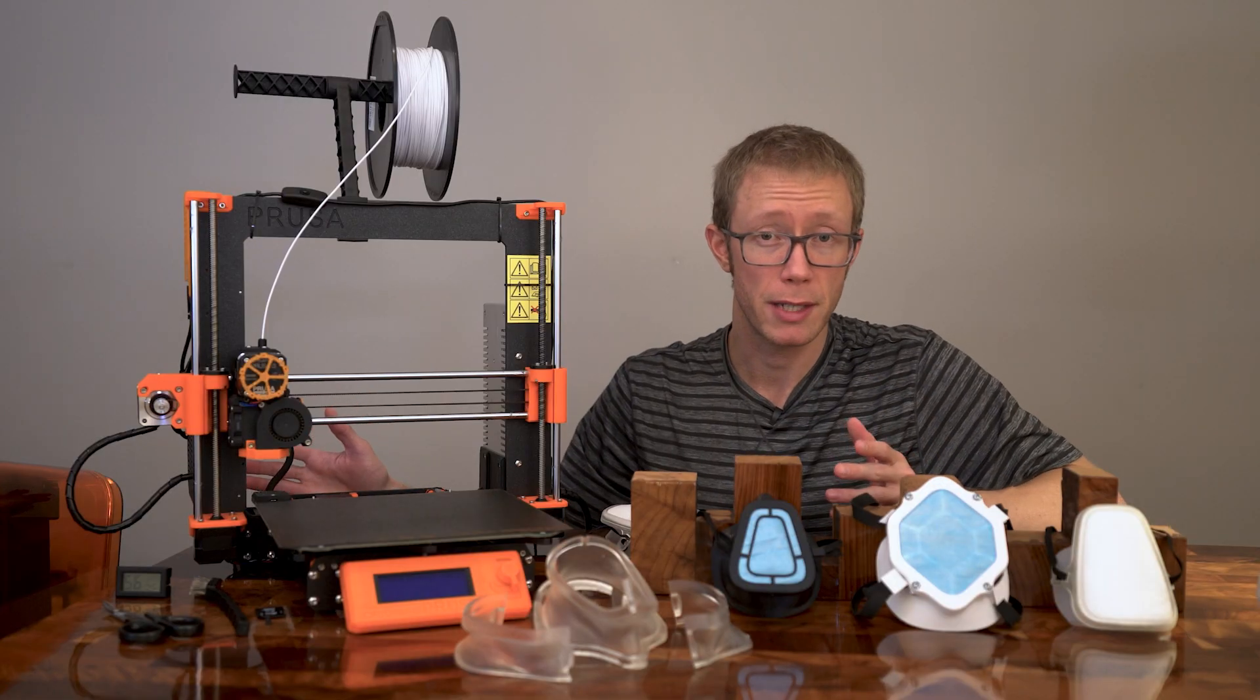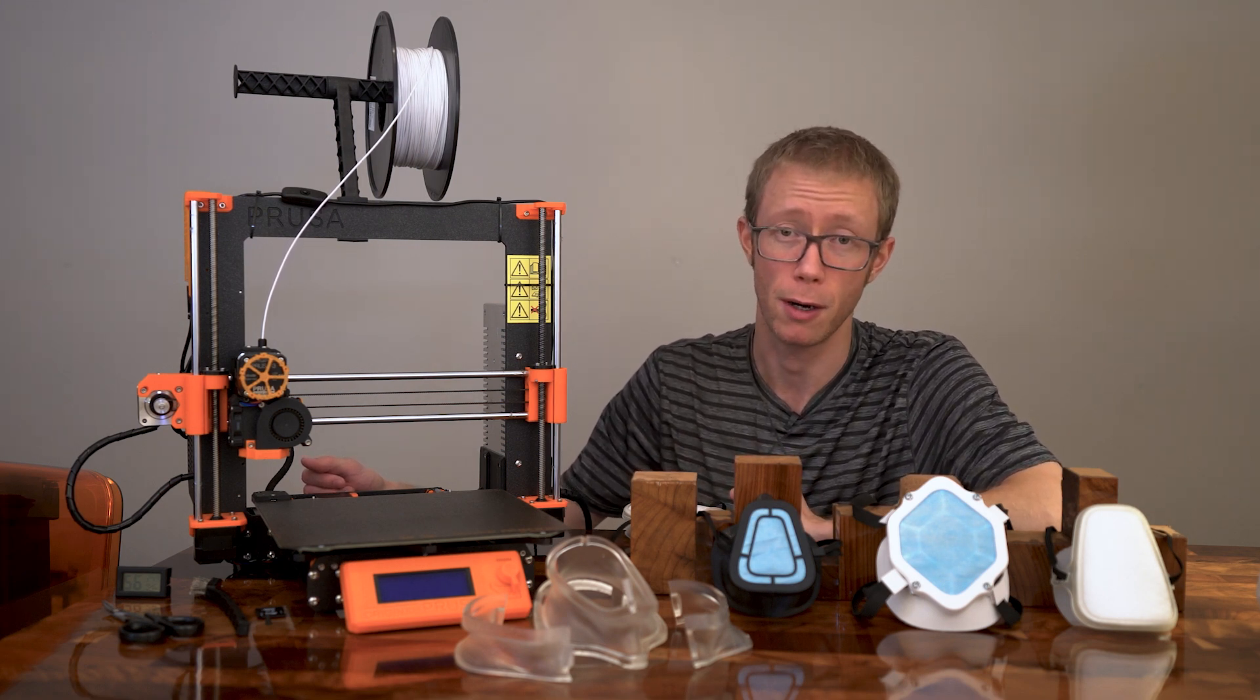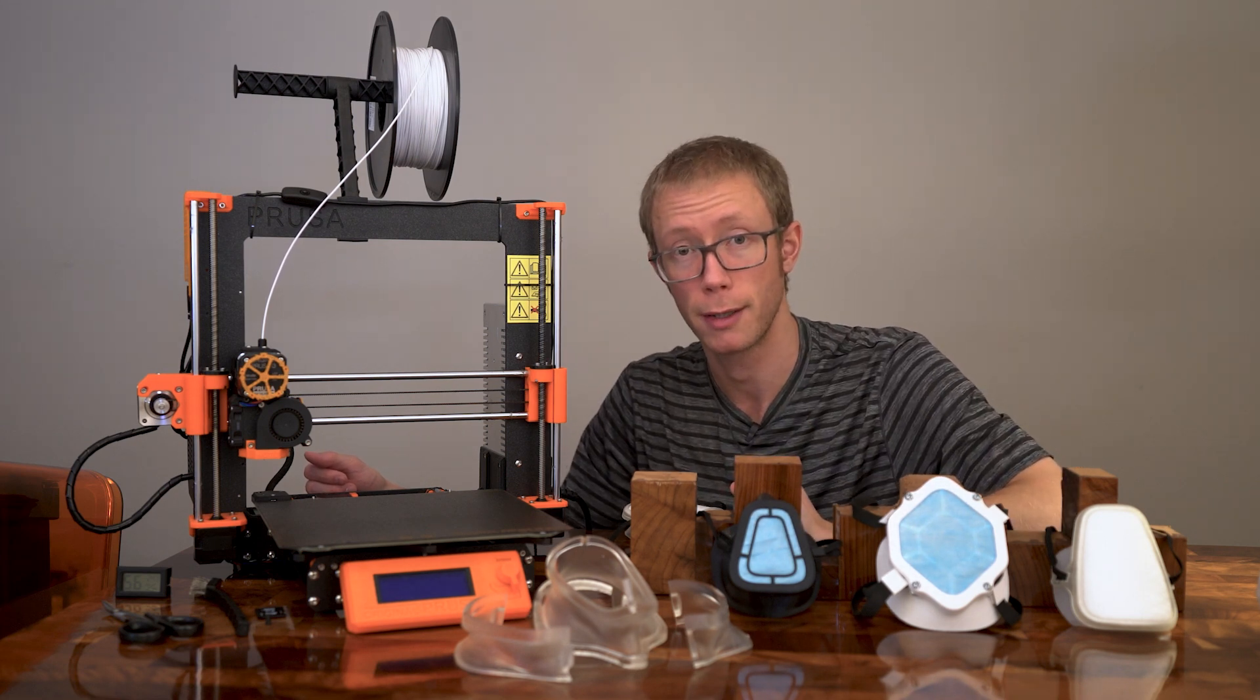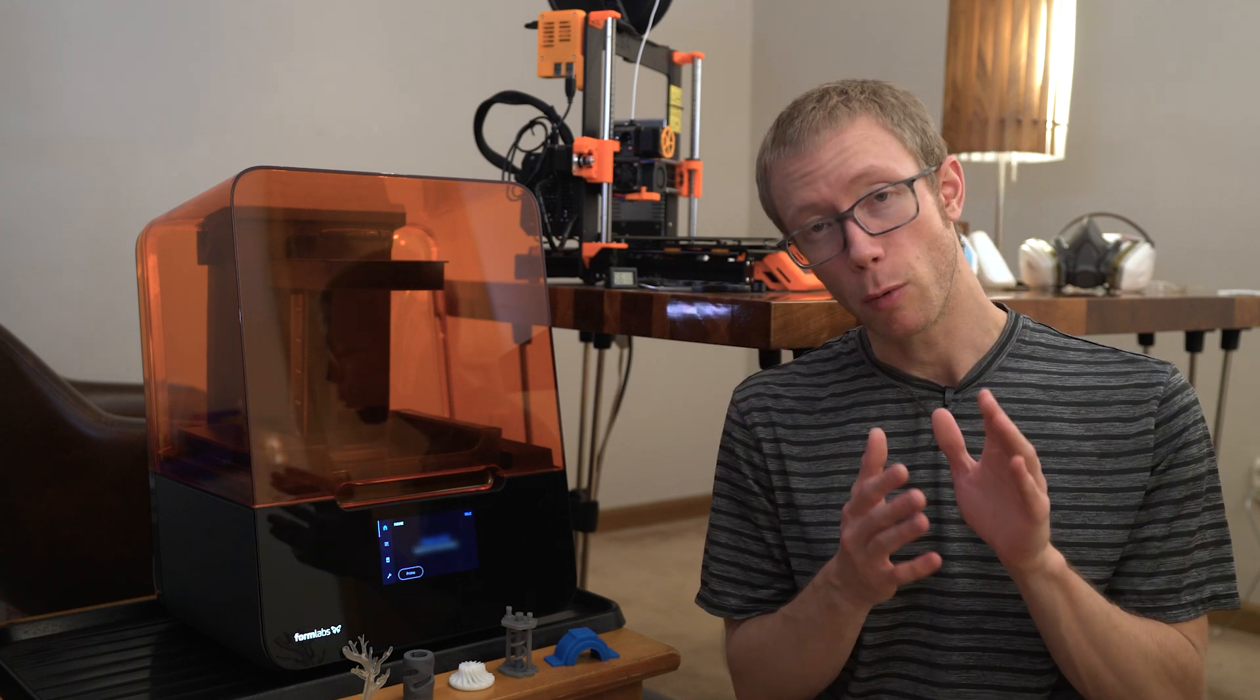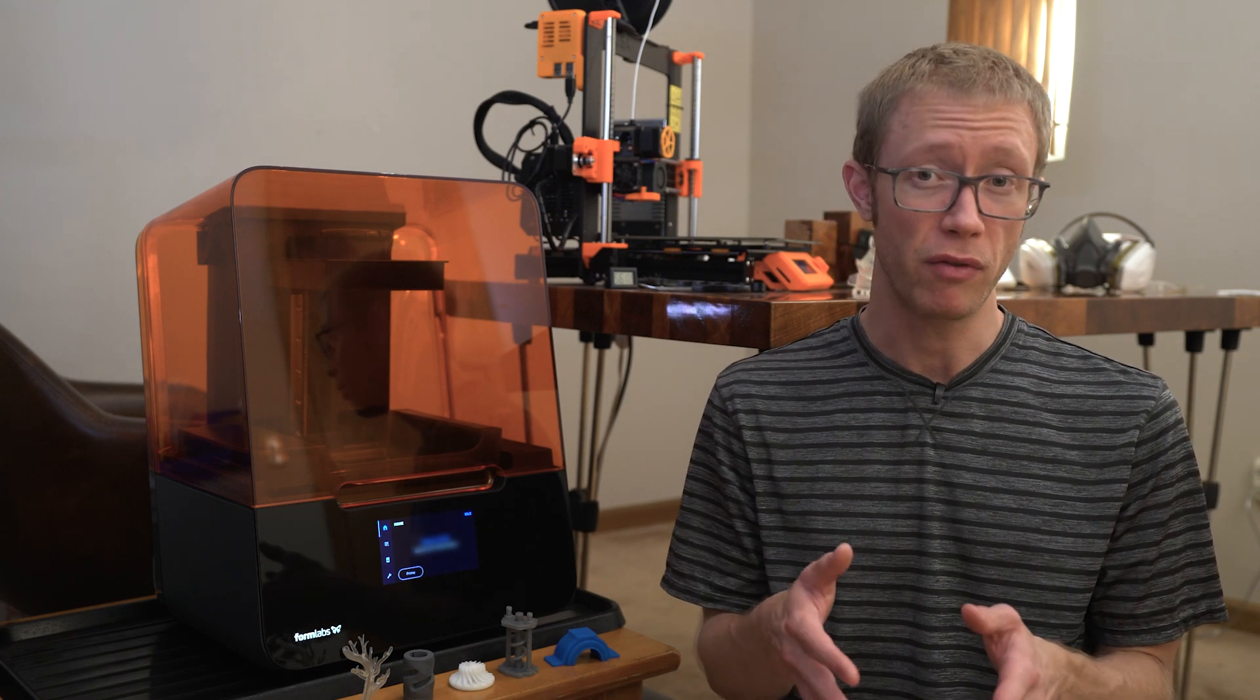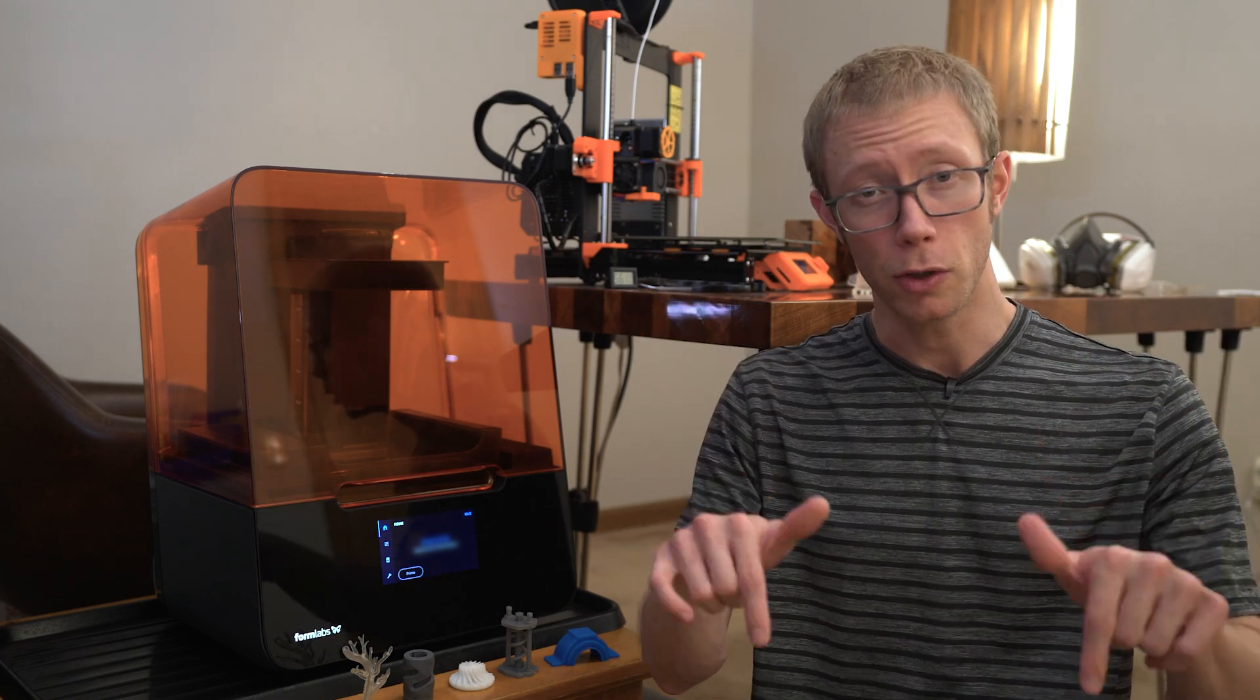This will be a bit more of an advanced tutorial than my previous two videos. Although it may be possible to make one of these on an FDM printer, you will likely have much more success on a resin printer. It is very important to have nice smooth surfaces in order for the mold to function correctly. I picked up a FormLabs Form 3, but I'd like to know what other machines are capable of producing this mask. As always, all the parts for this design are available to download for free. Just take a look in the description.